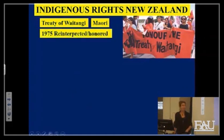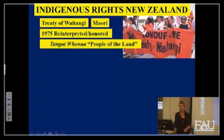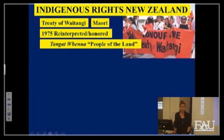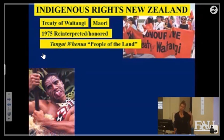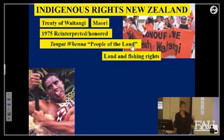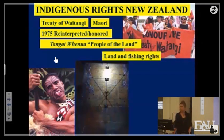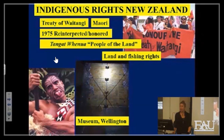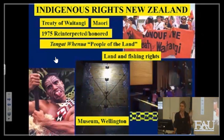Indigenous rights in New Zealand are different — they had a treaty: the Treaty of Waitangi. This is with the Maori. It has been reinterpreted and it is honored, so they're considered people with rights. The treaty was unenforced for a while, but it does give them land and fishing rights — very different than the Aborigines in Australia.